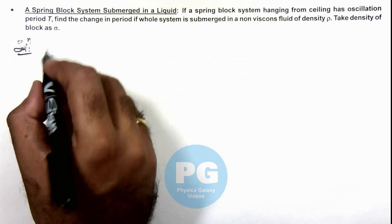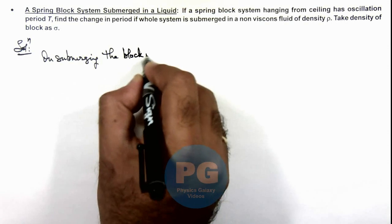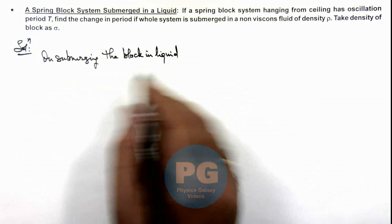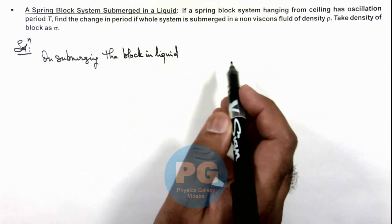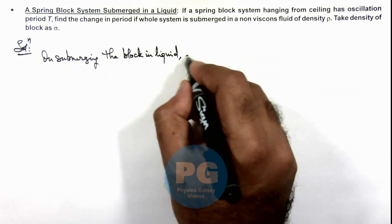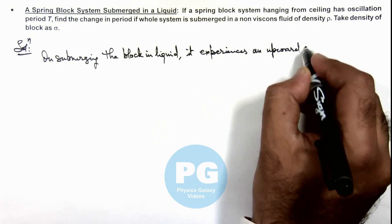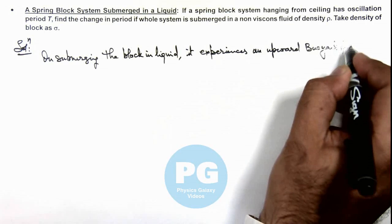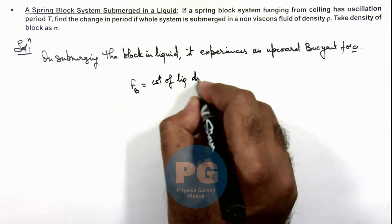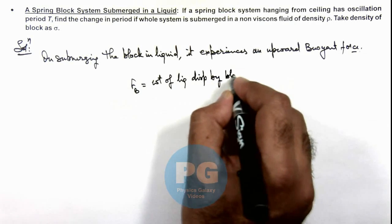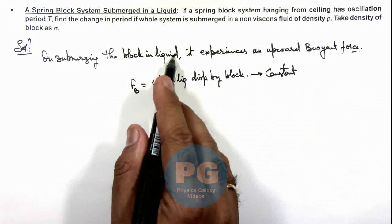On submerging the block in liquid, we can directly state that the liquid exerts a constant buoyant force on the block. This buoyant force acts upward, and its value equals the weight of the liquid displaced by the block. This buoyant force is constant as long as the block remains completely submerged in the liquid.